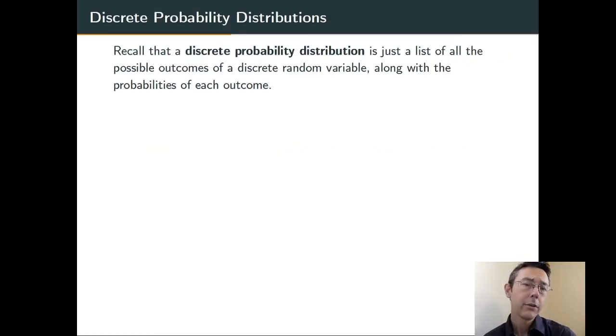So when you have a discrete random variable, you also get a discrete probability distribution, a list of all the possible outcomes for that variable together with the probabilities for those outcomes.